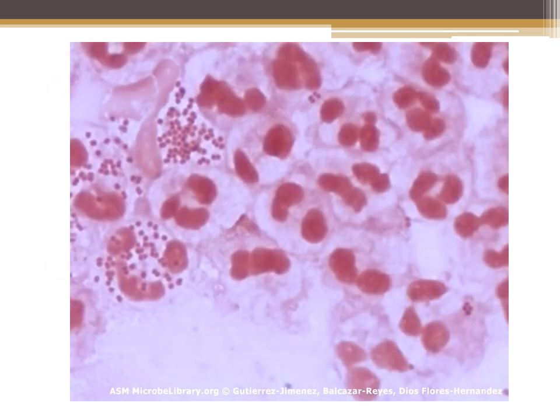Here's a picture of Neisseria gonorrhoeae from a urethral exudate. In this urethral discharge you can see gram-negative diplococci that are bean shaped — in pairs where the cocci are a little taller than wide. The large dark purple or pink circles are the inside of neutrophils, so you can see many gram-negative diplococci inside the cytoplasm of neutrophils.